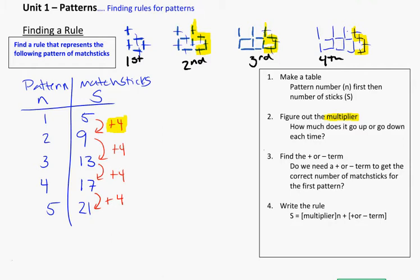The next thing is to figure out the plus or minus term. For the very first pattern, how many matchsticks do I need to build it? I need five matchsticks. I know each pattern is going to use four more each time. So if I'm already using four for the first one, how do I get to five? If I've got four matchsticks I know are going to be repeated, what do I need to get to five? That's the plus one. And if you look at the diagram of the first one, you'll notice there's the four — that shape that gets drawn on every single time — and one matchstick that's not included in that shape. That's the plus one, and that's what we need to get it started off right.